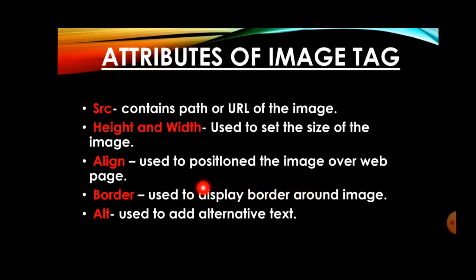A thick or thin dark line will appear around the image. Alt attribute is used to add alternative text. Sometimes, due to a wrong URL or incorrect file name, the image will not appear on the web page and the area will be blank. Just to avoid that blank area, we can use alt text — that is called alternate. If the image does not appear, the alternate text will appear on the screen. For example, if you want to add a flower image but due to a wrong path it doesn't load, you can write 'flower' in the alt attribute and that text will appear. So the five attributes are: SRC, height and width, align, border, and alt.